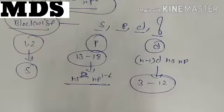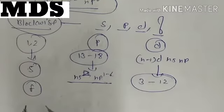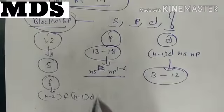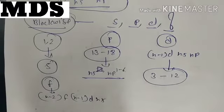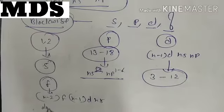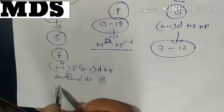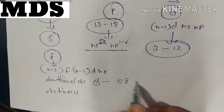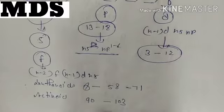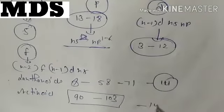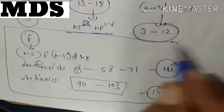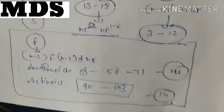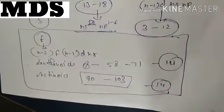The inner transition elements are known as f block elements. The general electronic configuration is (n−2)f, (n−1)d, ns. These are also known as lanthanides and actinides. Lanthanides vary from atomic number 58 to 71, and actinides from 90 to 103. There are 14 elements in each — lanthanides as well as actinides — and they are known as f block elements because during electronic configuration their last electrons always enter the f sub-shell.